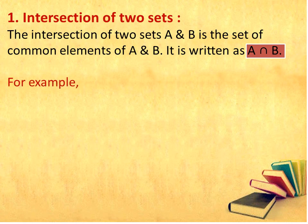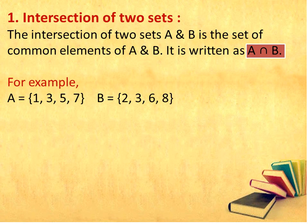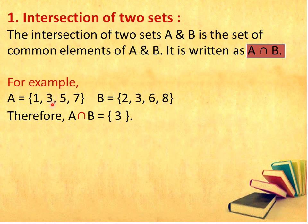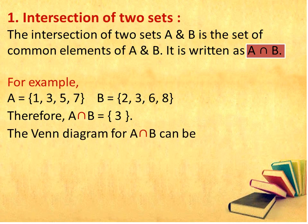For example, set A is equal to {1, 3, 5, 7} and set B is equal to {2, 3, 6, 8}. Here, you have to see that A intersection B will be the common element from both sets A and B. There is only one element which is common, that is 3.